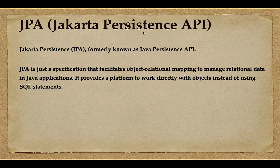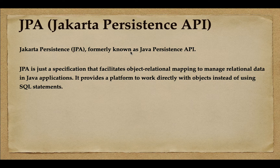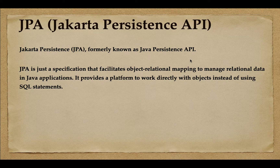JPA stands for Jakarta Persistence API, formerly known as Java Persistence API. The Eclipse Foundation took ownership of Java EE and changed the name from Java Persistence API to Jakarta Persistence API. JPA is a standard specification that facilitates object-relational mapping to manage relational data in Java applications. It provides a platform to work directly with objects instead of using SQL statements.